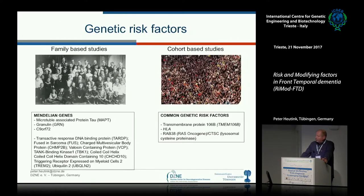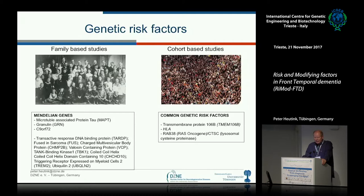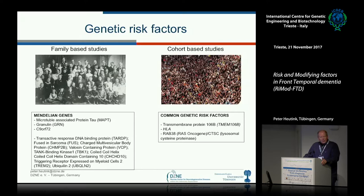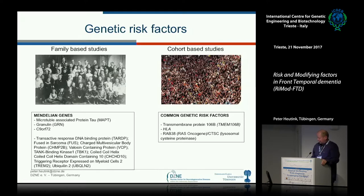Looking back at what we know about the genetics of FTD from family-based studies, a number of genes have been found. The three most frequently mutated are the tau gene, granulin, and C9ORF72, but other listed genes are infrequent causes. In cohort-based studies, some genetic risk factors have been identified, though we are still in a relatively early stage compared to other diseases. Still, only a minority of patients — even a minority of familial cases — can be explained by these mutations, leaving room to identify more genes as starting points for understanding pathogenesis.